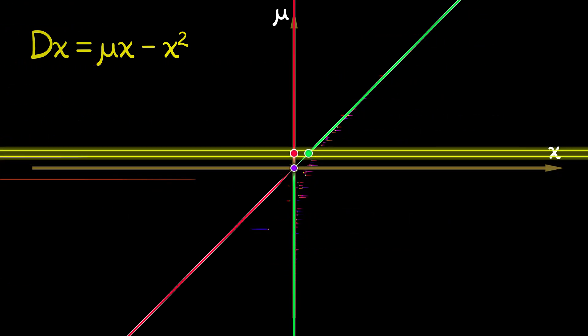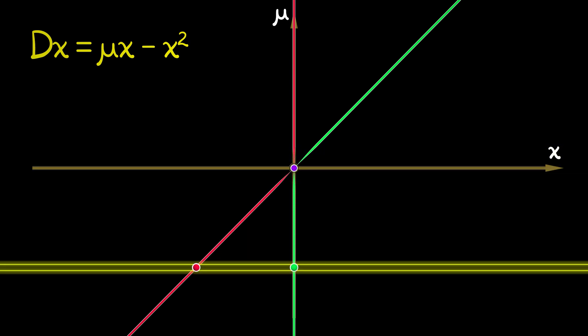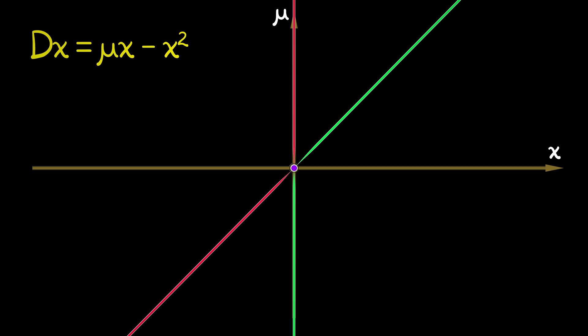The thing to remember about the transcritical bifurcation is as mu passes through zero, you have a pair of equilibria, one stable, one unstable, that collide into each other and cross. They exchange stabilities. That's very different than the saddle node that we saw earlier. That's what the transcritical bifurcation looks like.